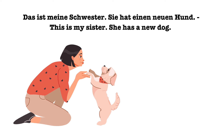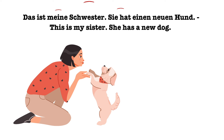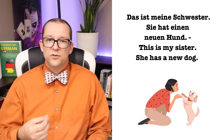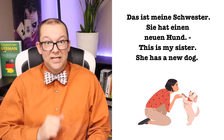Now let's look at some example sentences. 'Das ist meine Schwester. Sie hat einen neuen Hund.' — This is my sister. She has a new dog. In this sentence, I'm talking about my sister; she is not in this conversation, so I am talking about her in the third person. The third person singular pronoun for a female person is 'sie,' meaning she, and the conjugated form of the verb 'haben' is 'hat,' confirming the only translation here is she.